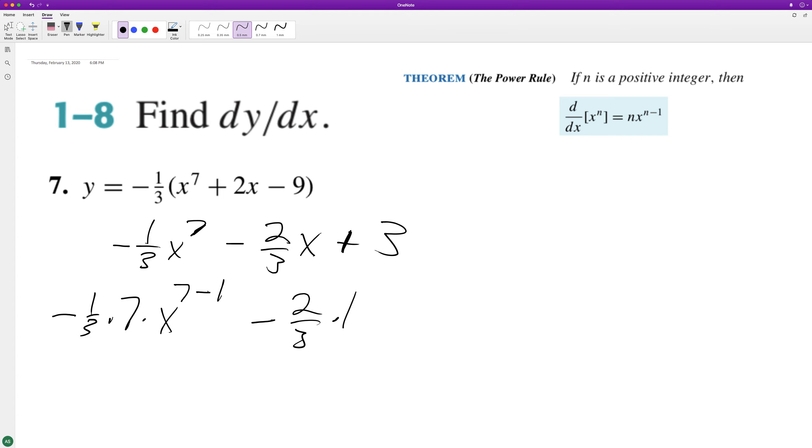then the derivative of x raised to the one is just x raised to zero, which is one, plus the derivative of a constant is zero.